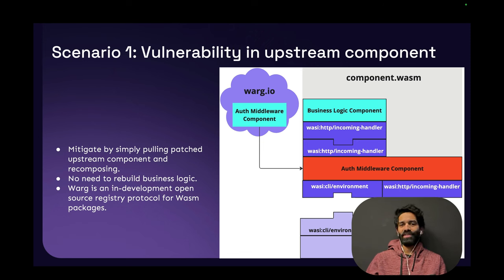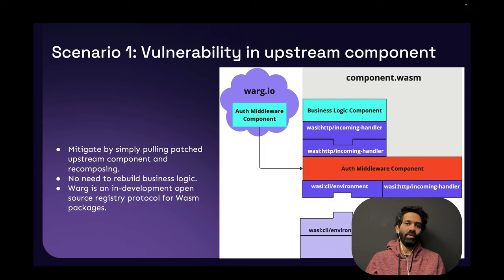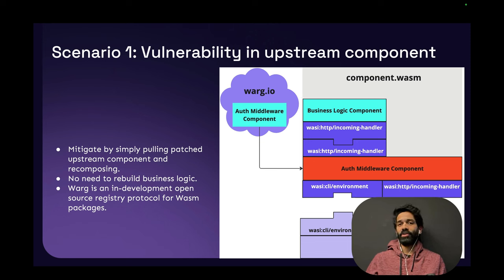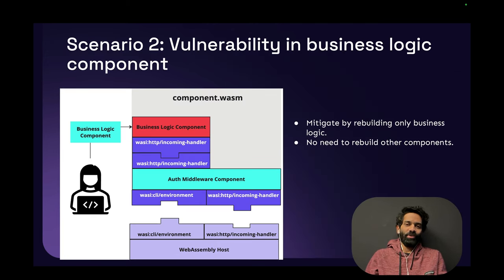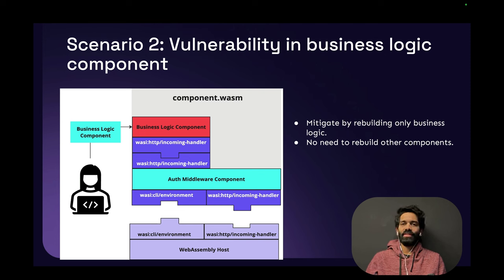To take this a step further, the Bytecode Alliance is working on something called warg — check out warg.io — which is an open-source registry protocol for WASM packages. In the future on warg, you will see things like an authentication/authorization middleware as a standard that you can use in your WebAssembly app. Similarly, if there's a vulnerability in the business logic, the layers below it are not affected because we've written it in a componentized manner. All you do is rebuild only your business logic — no need to rebuild the middleware or the underlying WASM layers.